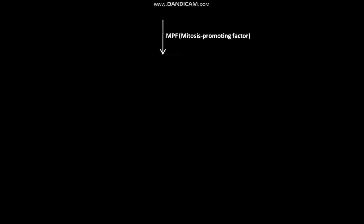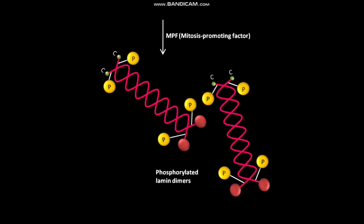Due to this phosphorylation, the lamin tetramer depolymerizes to form phosphorylated lamin dimers. As a result, the nuclear lamina disintegrates.